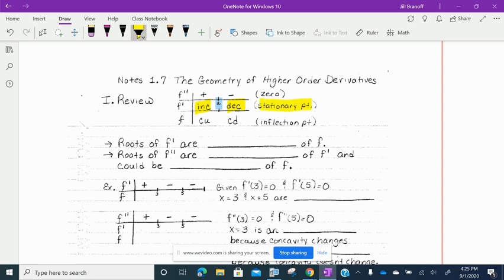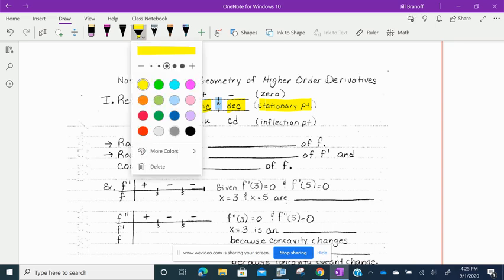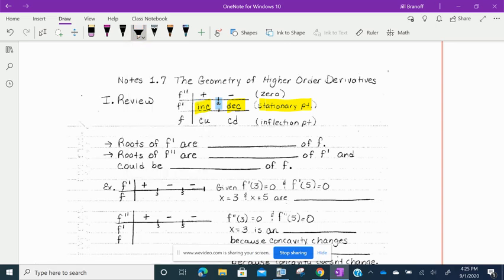So we have a stationary point for that second derivative, and the concavity is changing on our original graph. So concave up where the second derivative is positive, concave down where the second derivative is negative. So we have an inflection point at x equals a.